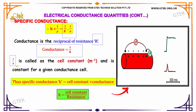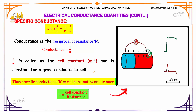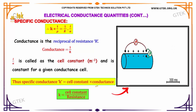The quantity L divided by A is called the cell constant, with units of meter to the power of minus 1. It is a constant for a given conductance cell. Thus, specific conductance kappa k equals the cell constant multiplied by conductance, or equivalently, k equals cell constant divided by resistance R.